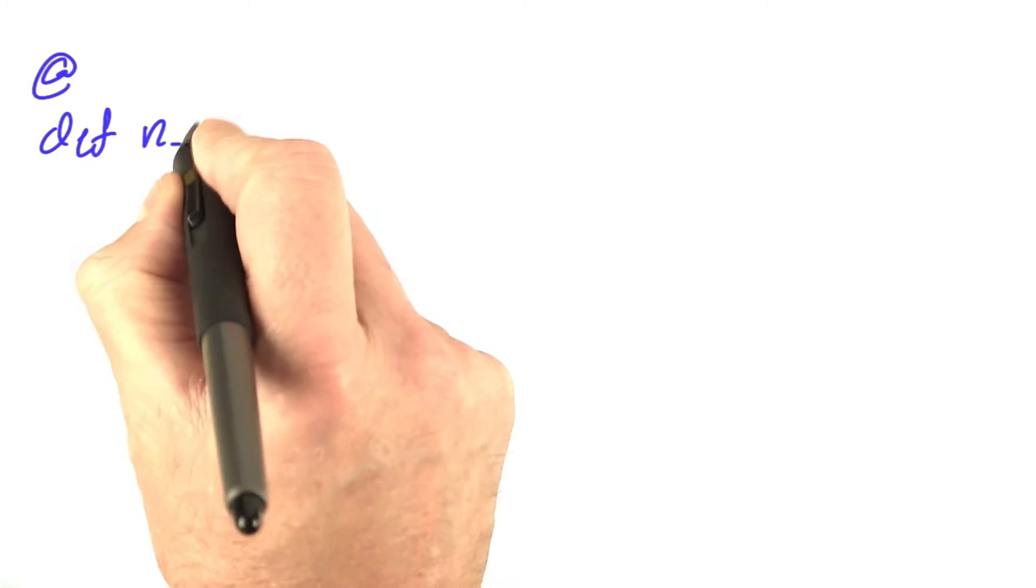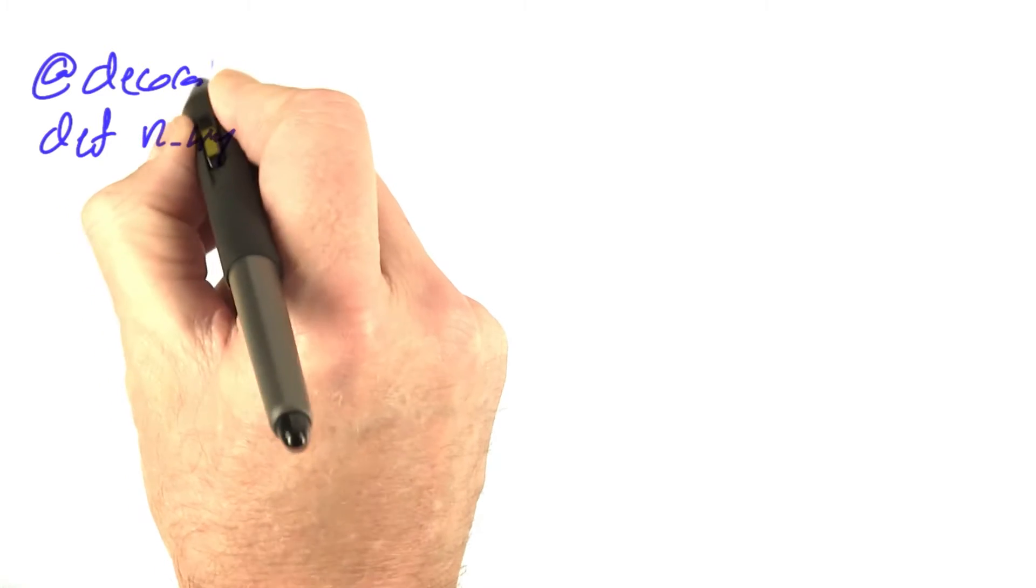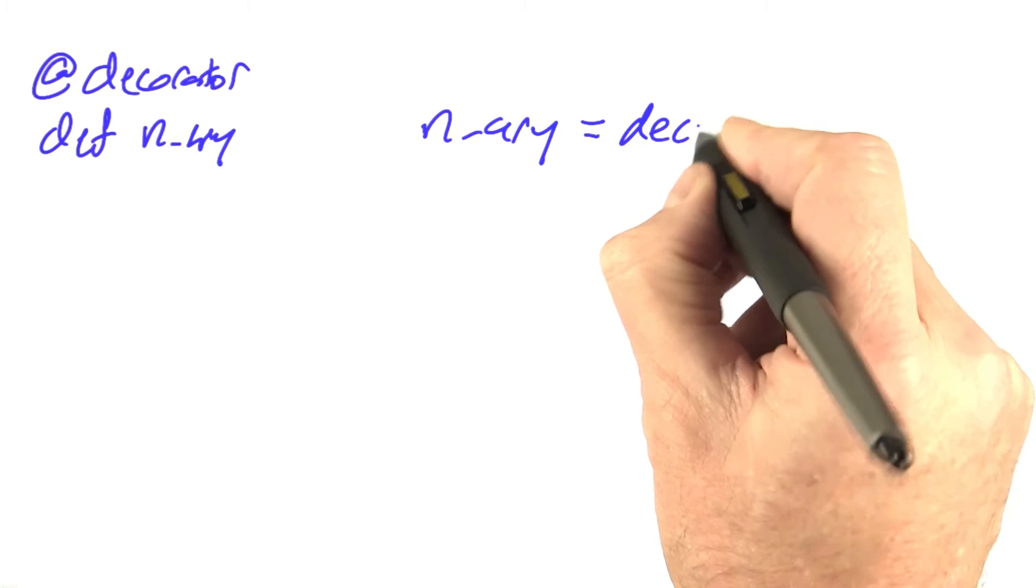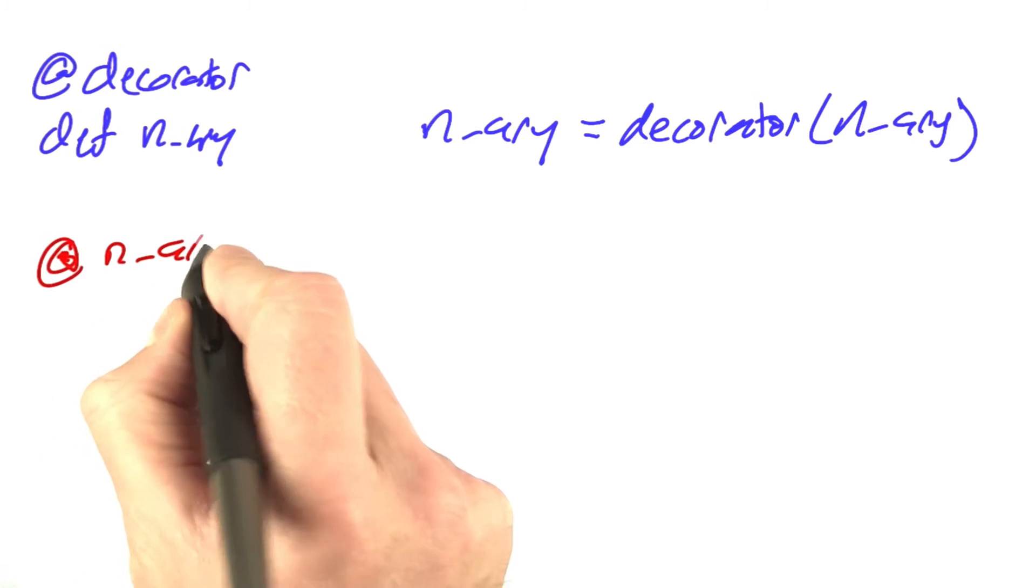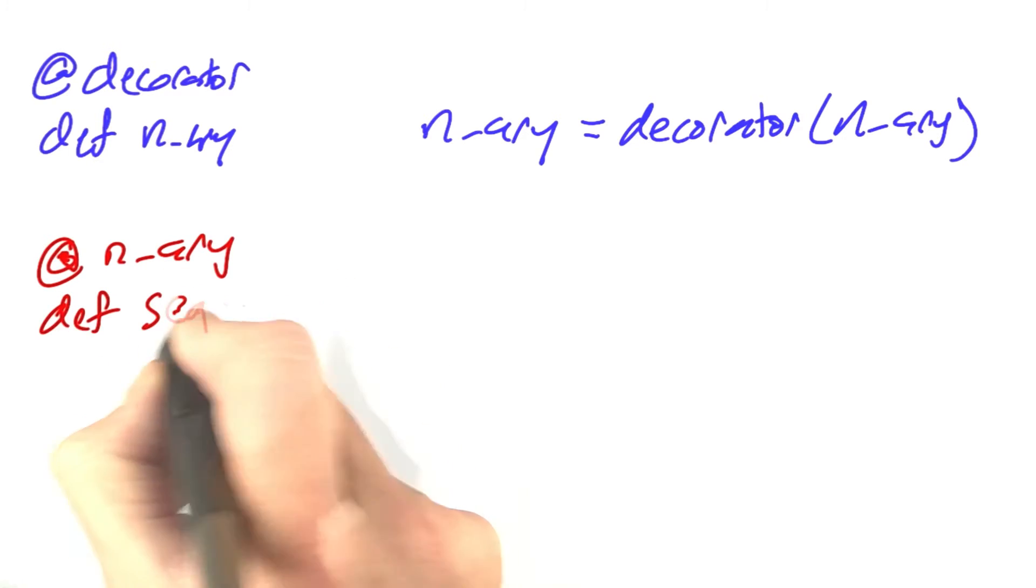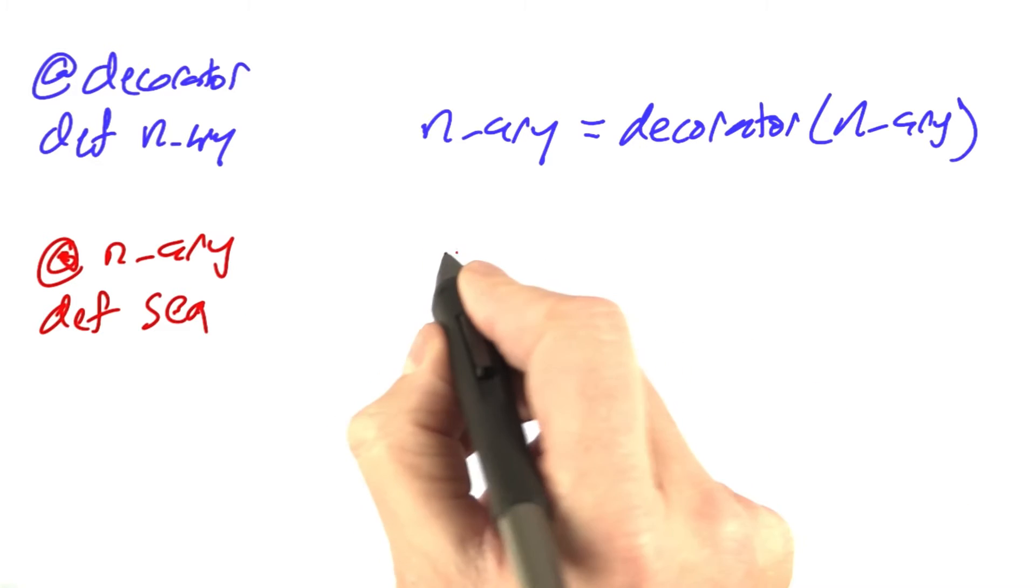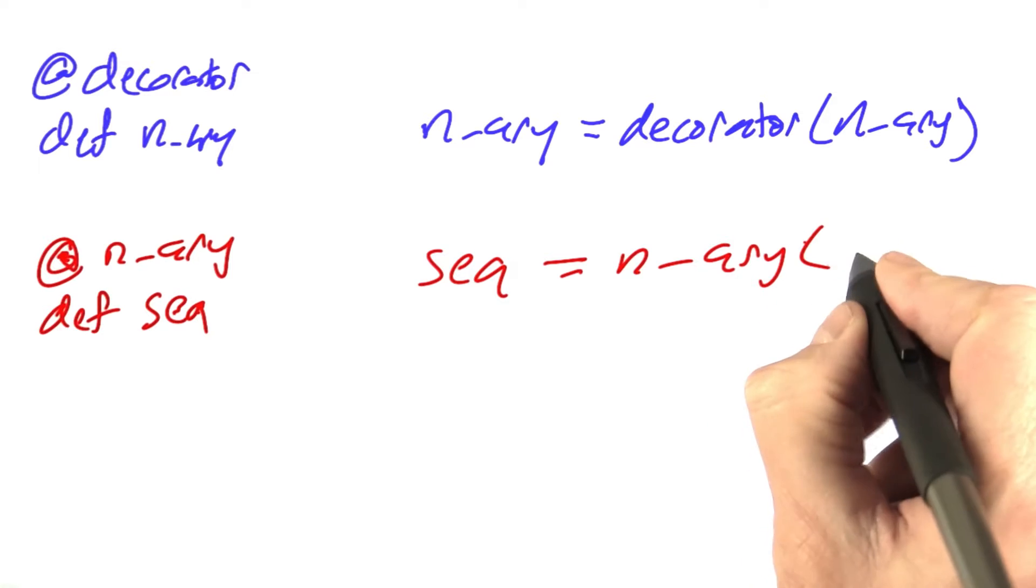We've defined nary, and we've declared that as being a decorator, and that's the same as saying nary equals decorator of nary. Then we've used nary as a decorator. We've defined sequence to be an nary function, and that's the same as saying sequence equals nary of sequence.